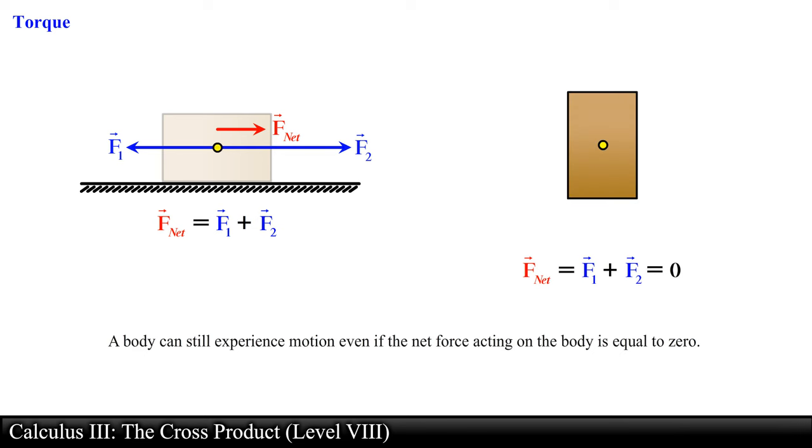For example, say we have a box whose mass is uniformly distributed and is sitting on a table. If we apply two equal forces in opposite directions along the center of the box, this will create a net force equal to zero and the box will not accelerate. It will have no translational motion.